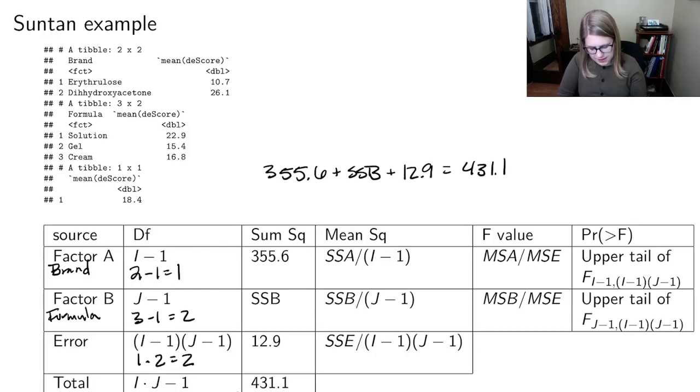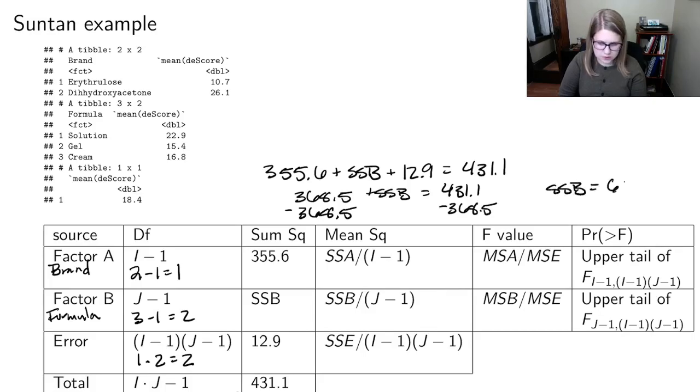So if I add that 355.6 and the 12.9, I think that's 368.5 plus SSB is equal to 431.1. And then subtract 368.5 from both sides. And then I've got SSB is equal to 62.6. So I'll write that in, 62.6.